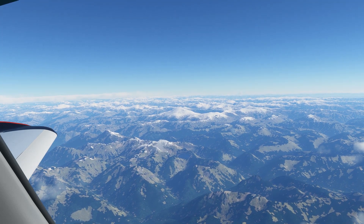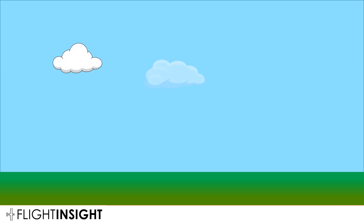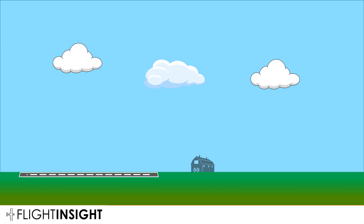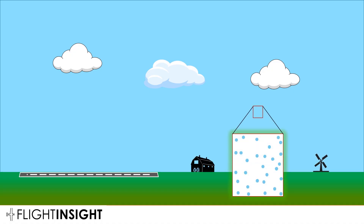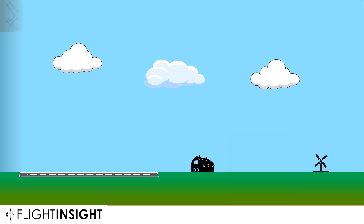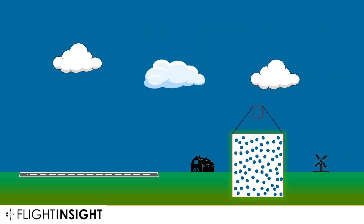Air has mass. It doesn't feel heavy, but all the little air molecules you fly through have mass. If we take a parcel or a space of air, it'll have some of these air molecules in it. On a day with low pressure, the air molecules are spaced out and diffuse. On a day with high pressure, they're packed tightly together. The airplane loves high-density air. The propeller produces more thrust in higher-density air — there are more air molecules for the blade to push.